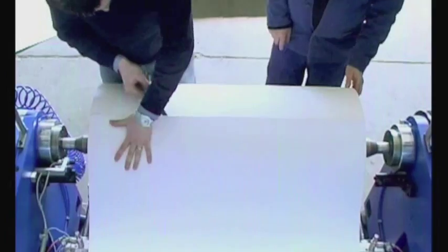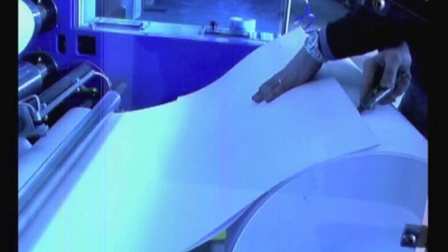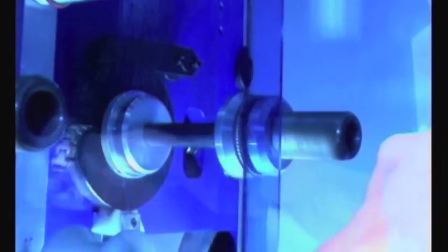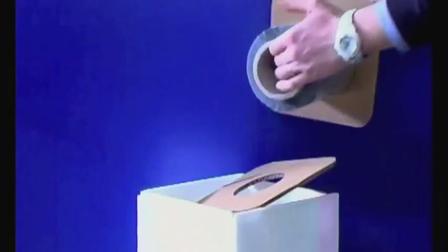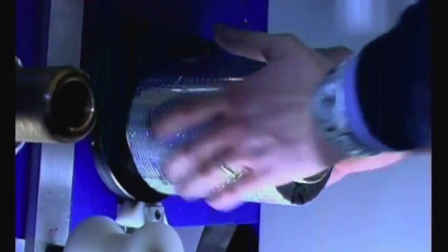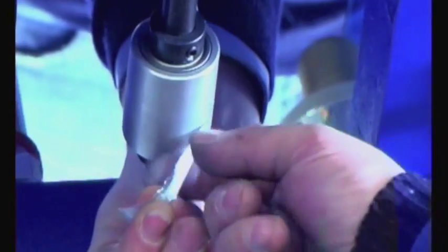Paper is added to the new reel and exceeding waste is cut. The hologram spool is inserted into the unwinding shaft and fixed by a manual locking system. The hologram stripe is now positioned on the different path rollers. Different attempts are necessary to reach perfect alignment with the paper.